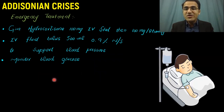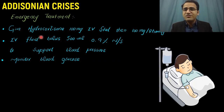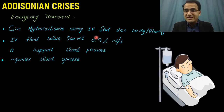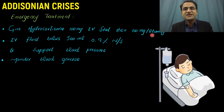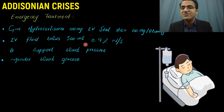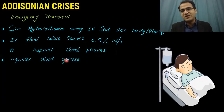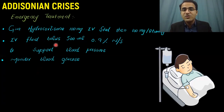Emergency treatment of Addisonian crisis includes giving hydrocortisone 100 mg IV stat, then 100 mg every 8 hours. You also give an IV fluid bolus of 500 ml of 0.9% normal saline to support blood pressure, and you monitor blood glucose levels. Usually, giving hydrocortisone will also correct the blood glucose levels.